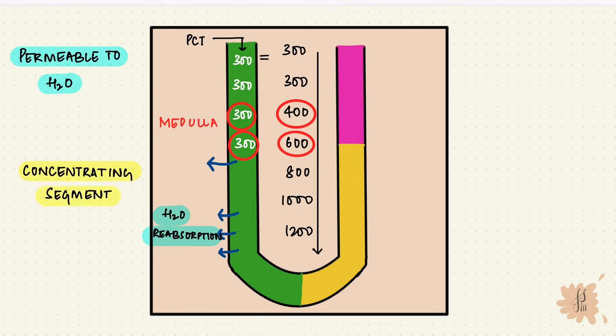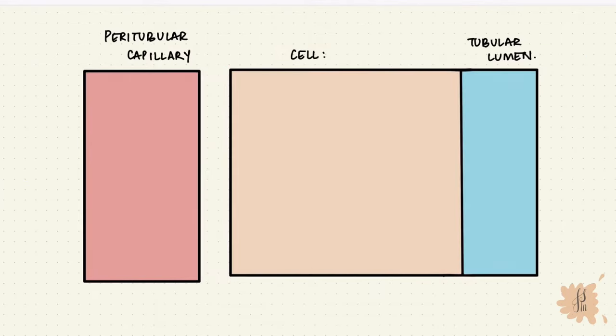The ascending segment is impermeable to water, so it's opposite to the descending limb. Both the thick and the thin portions are impermeable to water. The thick ascending limb is more important than the thin portion. It has a thick epithelium with the sodium-potassium-2-chloride co-transporter on the luminal membrane, that's the NKCC2.